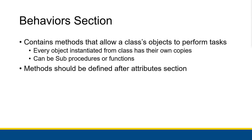Methods should be defined after the attributes section. You want all of your properties and variables defined at the very top, and then the methods that may be using those properties and member variables should be defined after that. At the very least, it helps with readability quite a bit.